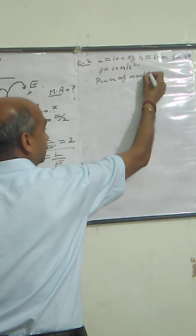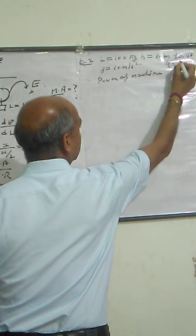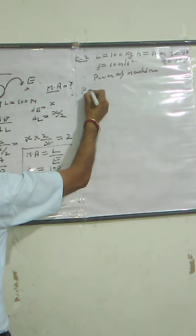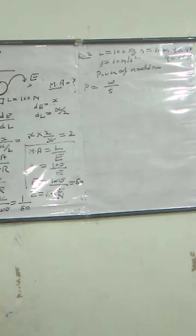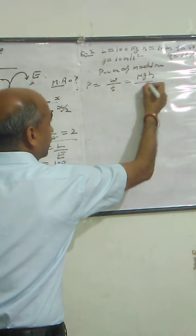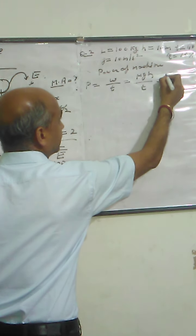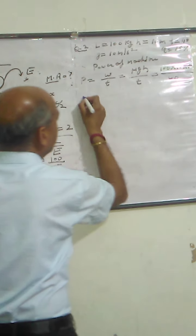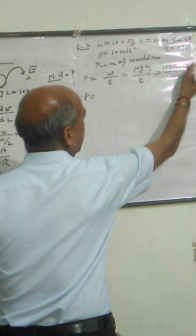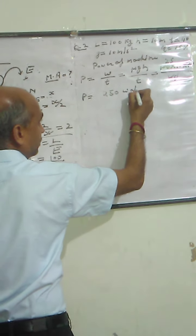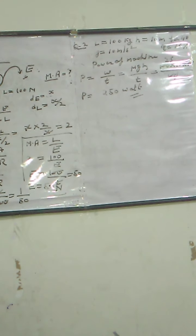The efficiency of the machine is 75%. To find power, power equals potential energy upon time, which is mgh upon t. m is 100, g is 10, h is 10, t is 40. Solving: zeros cancel and we get 250 Watt. So power output of the machine is 250 Watt.